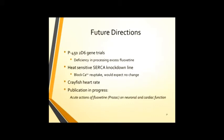Some future directions that we can take this study in. We can look at the P450 2D6 gene that I briefly went over in the case study or we can find a similar gene in Drosophila that shows a deficiency in processing excess fluoxetine to see what effect the addition of fluoxetine would have to those flies. We could also use a heat-sensitive SERCA knockdown line. This would be another approach to looking at the endoplasmic reticulum and whether it was the SERCA or the ryanodine receptor which of those was either blocking or dumping out calcium. This would be a more genetic approach to it and give us more data to back that up with. We can also look at crayfish heart rates in addition to the Drosophila rates.